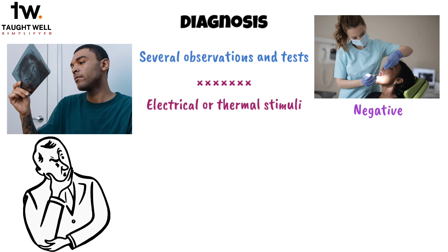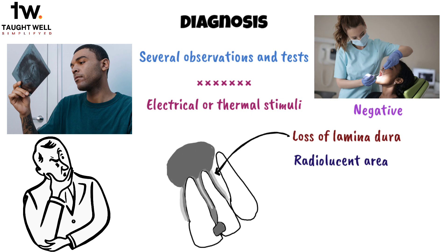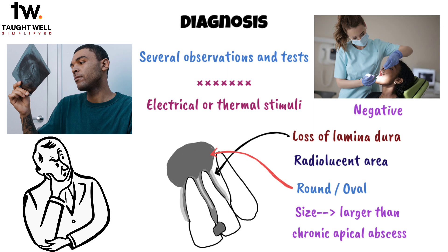Patients may often recall a history of prior pain related to the affected tooth. Typically, a radiographic examination reveals specific characteristics. There is often a loss of continuity in the lamina dura along with a radiolucent area. This radiolucent area generally appears round in shape, unless it's adjacent to other teeth, in which case it might appear flattened and take on an oval form. The size of the radiolucent area can be larger than what's typically seen in an asymptomatic chronic apical abscess, and it may encompass more than one tooth.